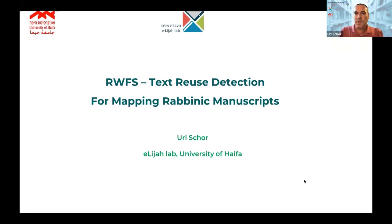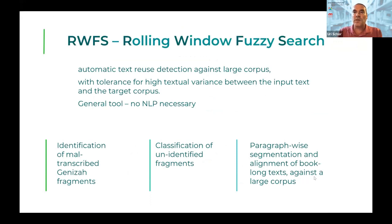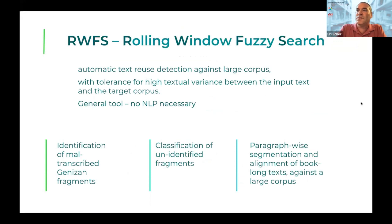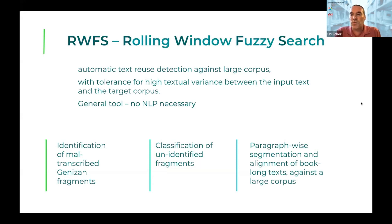Rufus is a text reuse detection algorithm — actually better referred to as a method. It's a statistical classification method which scales well with the search corpus, the target library, so we can work well where the target library is very large. It can also overcome significant variance between the input text — the text you have in hand that you're looking for matches, for parallels — and the target matches within the corpus.